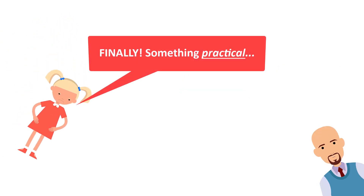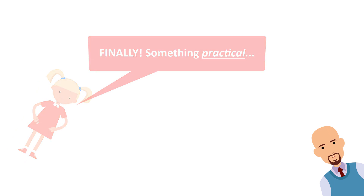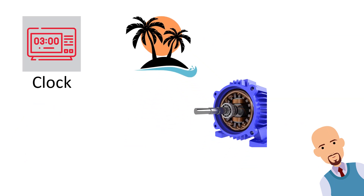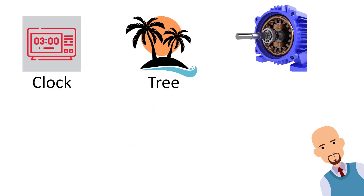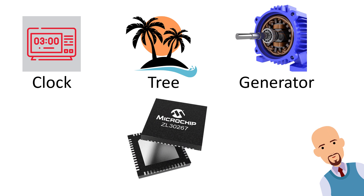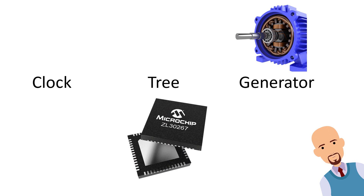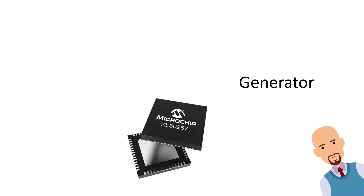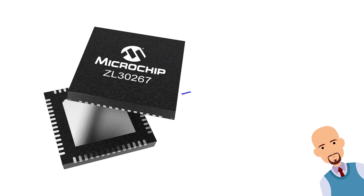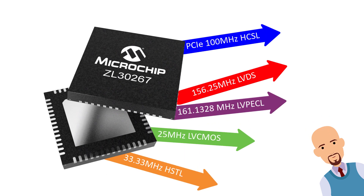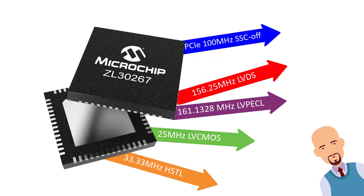Next, we will look at a practical example. Let's say that you have a clock tree generator on a chip, such as the ZL30267, creating many clocks for your system. Some clocks may be for PCIe, others may not be for PCIe. Some may have spread spectrum off, others may have spread spectrum on.